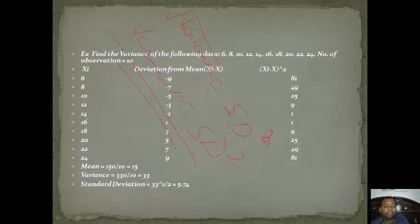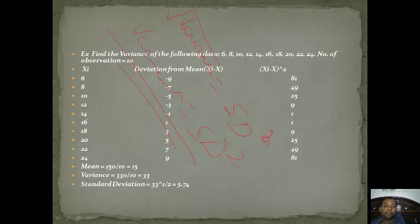First we find the mean: sum of observations divided by 10 = 150/10 = 15. Then we subtract the mean from each data value to get deviations, such as −9, −1, −1 and so on. We then square each deviation (xi − x̄)². After squaring, we get values like 81, 49, 25 and so on. We sum all squared deviations to get 330, then divide by 10 to get variance = 330/10 = 33. Standard deviation = √33 = 5.74.